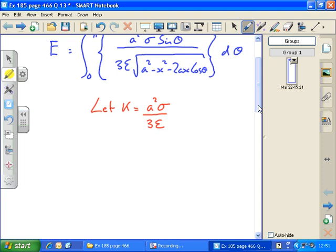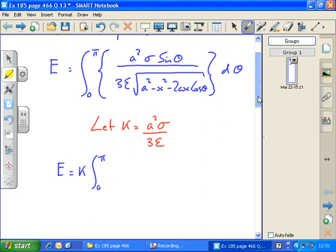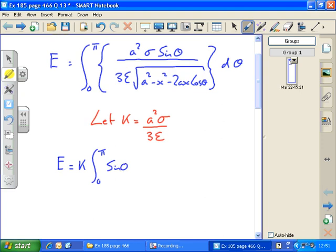So I can rewrite the integral as e equals k integral between 0 and pi of sin theta times a squared minus x squared minus 2ax cos theta to the power minus a half with respect to theta.